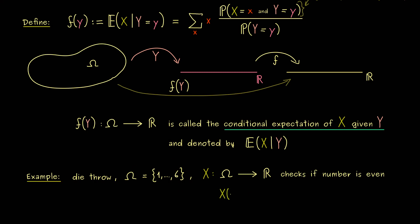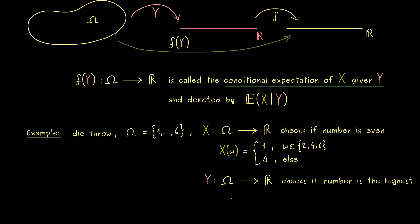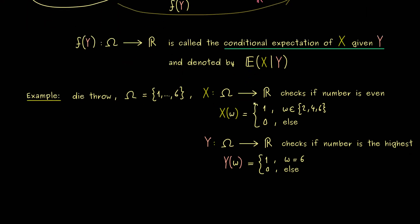Formally, X(ω) is either 1 or 0: we get 1 for outcomes 2, 4, and 6. The random variable Y checks whether the result is 6 — i.e., did we throw the highest number or not. Again, Y takes values 1 and 0, where Y=1 only when ω equals 6. The question is: can we calculate the new random variable E[X|Y]?